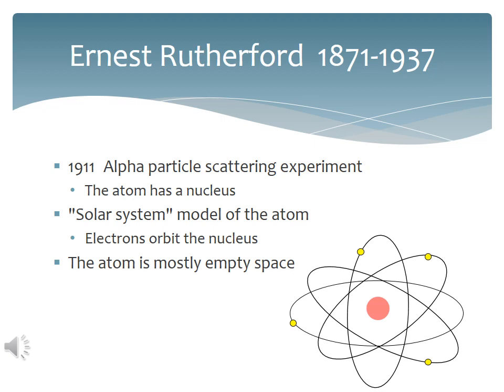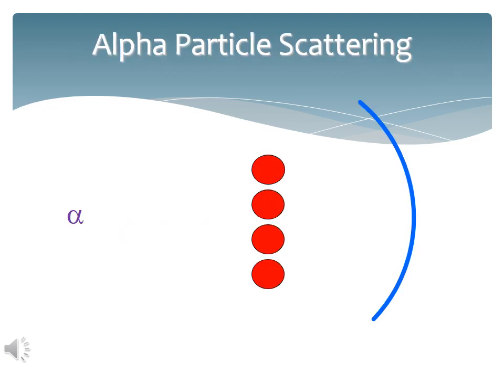Ernest Rutherford shot alpha particles at a thin gold foil, and in doing so he showed that the atom had a nucleus, and therefore the Thomson model had to be modified. The Thomson model of the atom predicted that the alpha particle should shoot straight through with very little deflection. However, when Rutherford's students Geiger and Marsden actually did the experiment, they discovered an occasional high angle deflection. Rutherford realized that the atom must have a small, very dense nucleus in order for the alpha particles to occasionally ricochet.